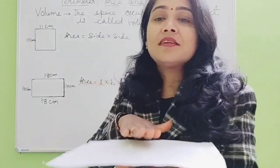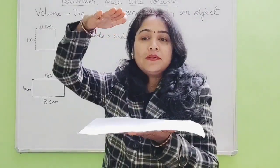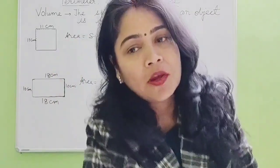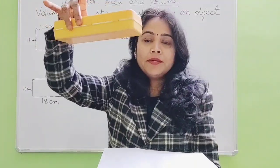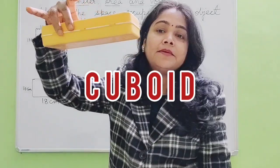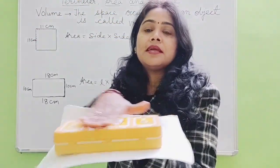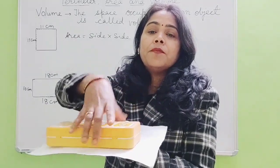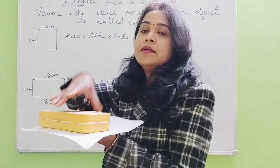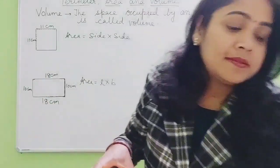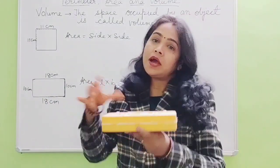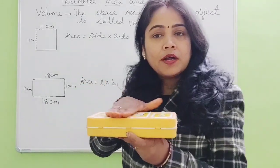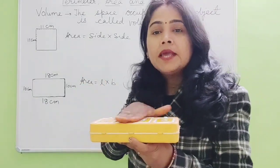A plane figure is occupying area but not volume, because it is not three-dimensional — it should have height also. Then it will occupy some space on the top and it will have volume. For example, this cuboid has length and breadth, occupying area on its surface. But it has height, so from the bottom it is also occupying some space. This is called volume — when we measure how much space it is occupying.